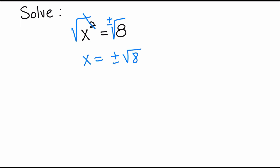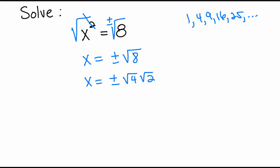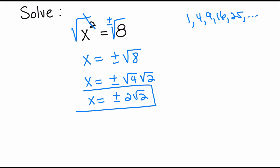Now we just have to simplify the square root of 8. We need two numbers where one of them is a perfect square — that is 1, 4, 9, 16, 25, etc. So what two numbers multiply to give me 8? The answer is 4 times 2. So x is going to equal plus or minus the square root of 4 times the square root of 2, and the square root of 4 is 2, so the answer is plus or minus 2 radical 2.